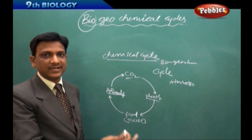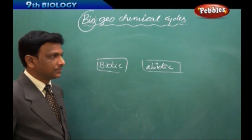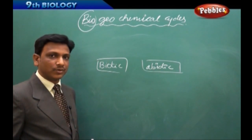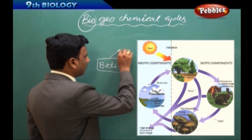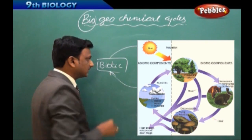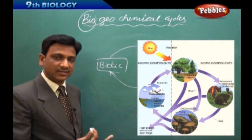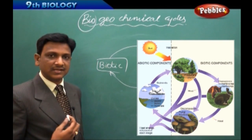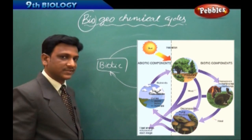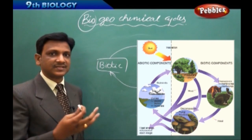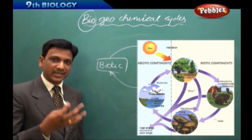In an ecosystem we find biotic and abiotic components that interact with each other. The biotic components get nutrients and required materials from the abiotic components — minerals from the soil. These nutrients are taken up by living forms, and from biotic forms they return to abiotic forms, so it happens in a continuous cyclic process.